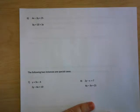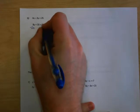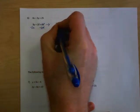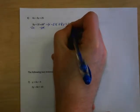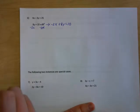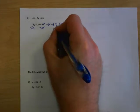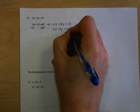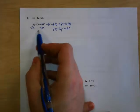For number 6, we have 4x minus 3y equals 25 and 8y equals 10 plus 3x. Subtracting 3x from each side of the second equation gives us negative 3x plus 8y equals 10. The other equation stays the same: 4x minus 3y equals 25.